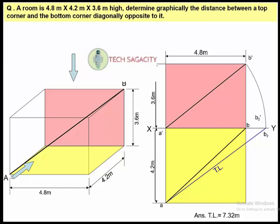The bottom corner to the top corner — that is the diagonal distance. This is the top view. The height is 3.6m. The height, length, and breadth are given. The dimensions are 4.8m and 3.6m.